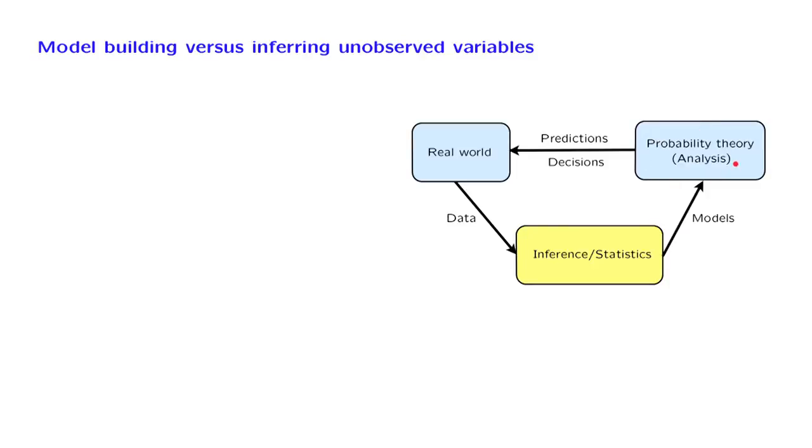On the other hand, there may be variables that are unknown, that are unobserved - variables that are part of the model but whose values are not known. In such cases, we still want to use data to make predictions or decisions about those unobserved variables. So model building might or might not be part of the problem we're dealing with.